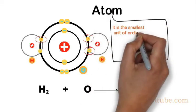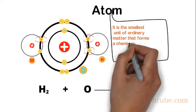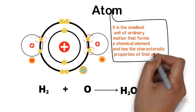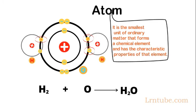It is the smallest unit of ordinary matter that forms a chemical element and has the characteristic properties of that element. An atom of an element will behave like the element.